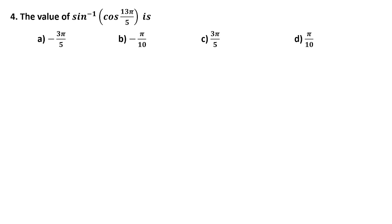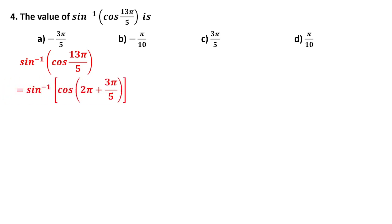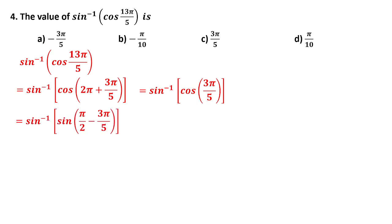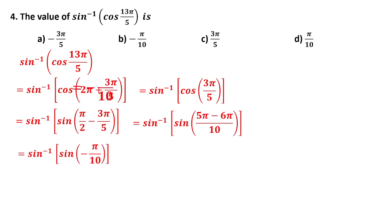Question number 4: Find the value of sin inverse(cos(13π/5)). The answer must be in the principal branch. Rewrite 13π/5 as 2π plus 3π/5, so cos(13π/5) = cos(3π/5). Now convert cos to sin: cos(x) = sin(π/2 - x), so cos(3π/5) = sin(π/2 minus 3π/5) = sin(minus π/10). Therefore sin inverse(sin(minus π/10)) = minus π/10. The answer is option B.